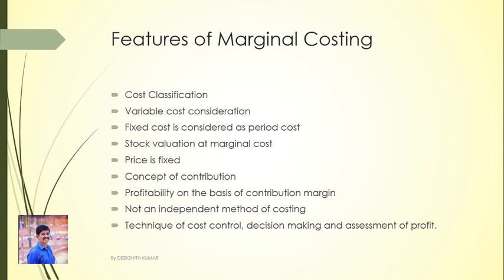The seventh feature is Profitability on the basis of Contribution Margin. In marginal costing, the profitability of departments or products is determined on the basis of their contribution margin. The eighth feature is that marginal costing is not an independent method of costing, unlike process costing or operating costing.